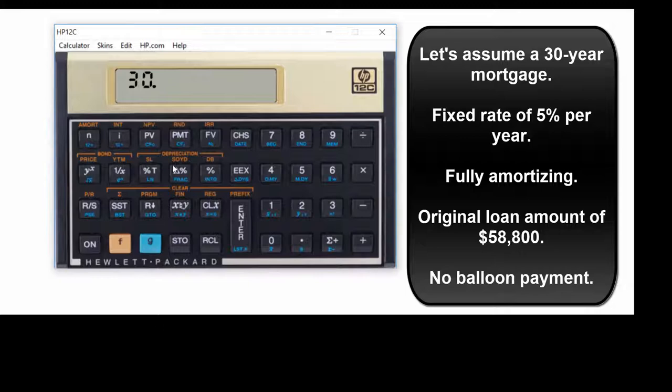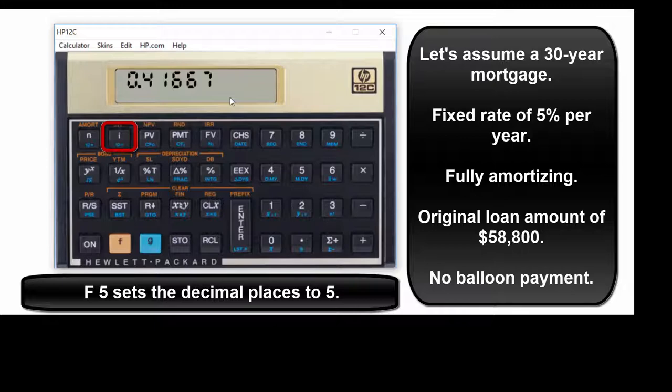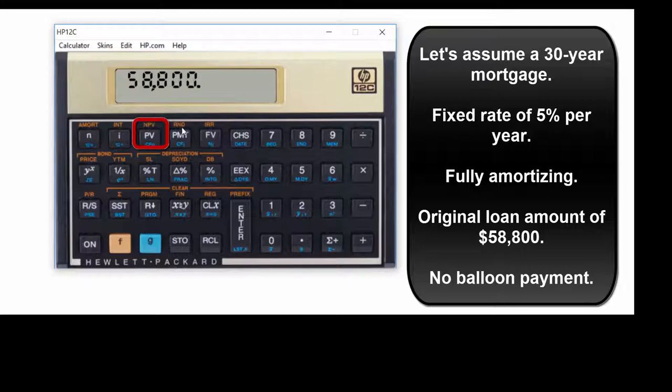A 30-year mortgage: 30 enter, 12 times—360 months, just like we predicted. The interest rate is 5% per year, so we're going to divide that by 12. Five enter, 12 divided by. That's going to give us the monthly interest rate. We're going to hit F5 just so we can see more decimals. 0.41667 is the monthly rate.